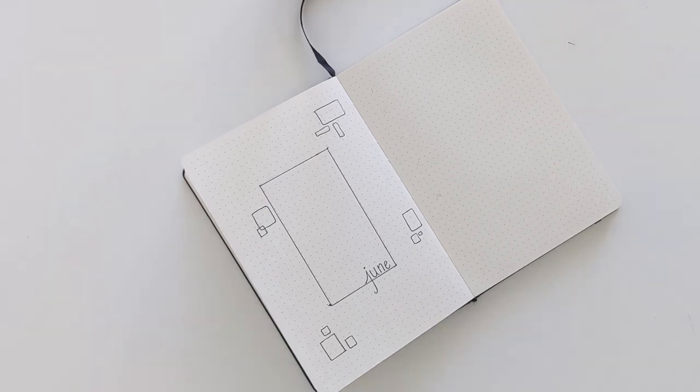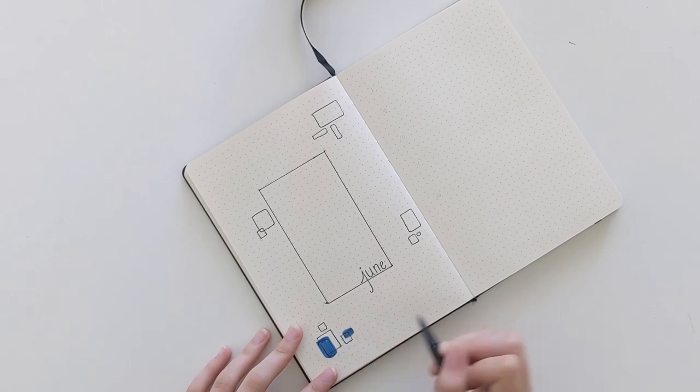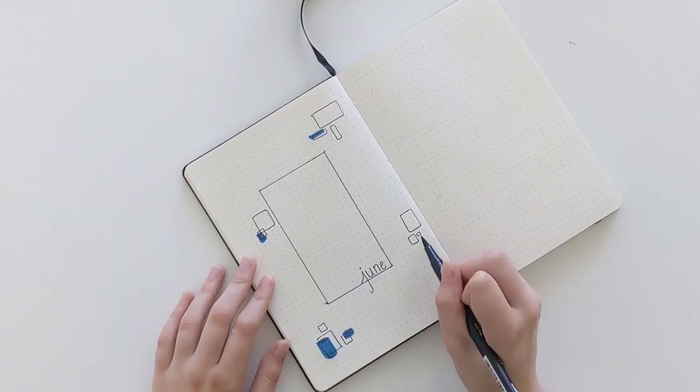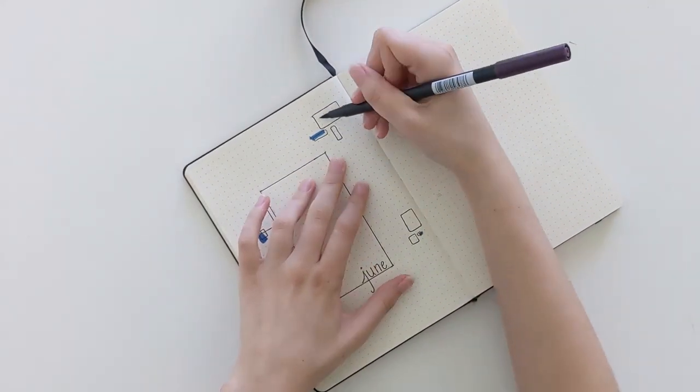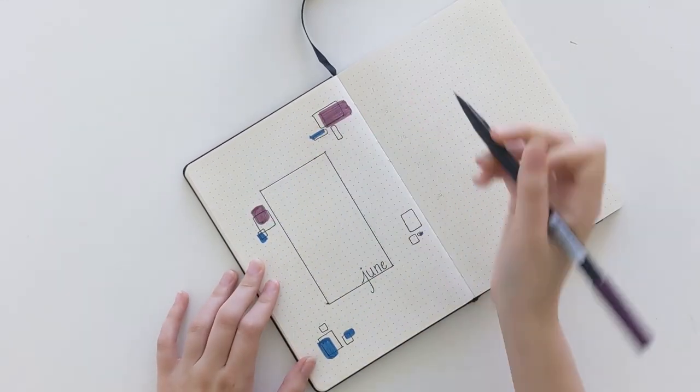One other thing you might want to include on your title page is a key. A key is just a tiny chart that lists all the symbols you plan on using, and what they mean. For example, you might use an open dot to represent a task that needs to be done, or a star for something important.